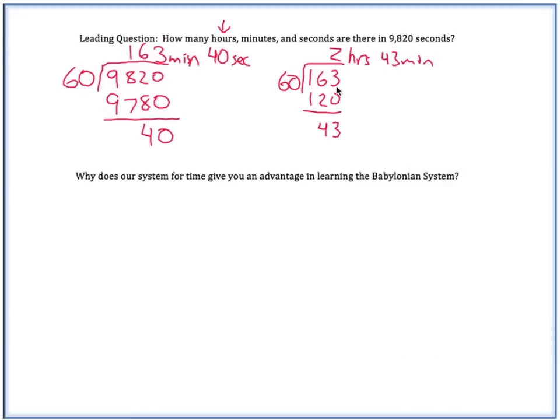So all in all, we would have 2 hours, 43 minutes, and 40 seconds. So why does our system for time give you an advantage in learning the Babylonian system? Well, it's in the same base, the same base of 60. So once we have seconds here, if we get up to 60 seconds, it spills over and becomes a minute. Once we have 60 minutes, it spills over and becomes an hour. And so this system could be written in Babylonian as being 2 hours, 43 minutes, and 40 seconds.